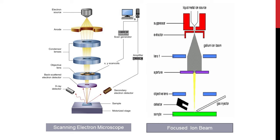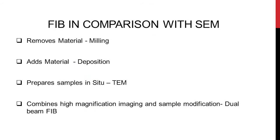This is a schematic of the ion beam and this is a schematic of the electron beam, which is the SEM and the FIB. What FIB can do in comparison with the SEM: we use electron microscopes for top surface morphology, but FIB can give you subsurface information as well. Since ions are heavier than electrons, they can remove material, which is termed as milling. FIB can also add material, called in-situ deposition or metal deposition. We can also prepare samples in-situ for TEM analysis with the help of the manipulator. Since it is a dual beam system with an SEM column, it can combine high magnification imaging with sample modification.